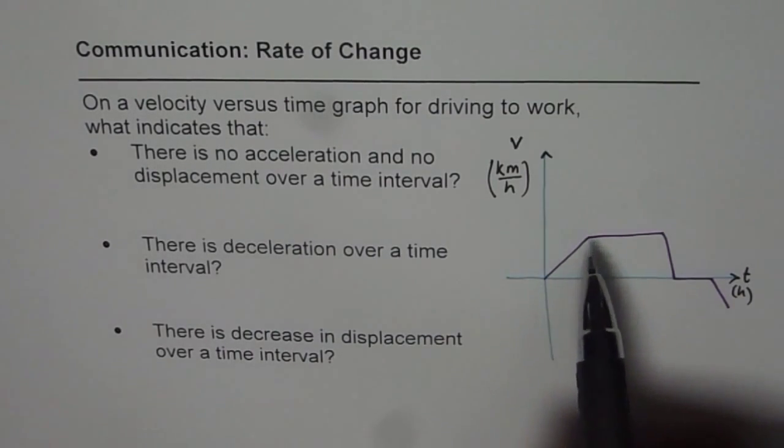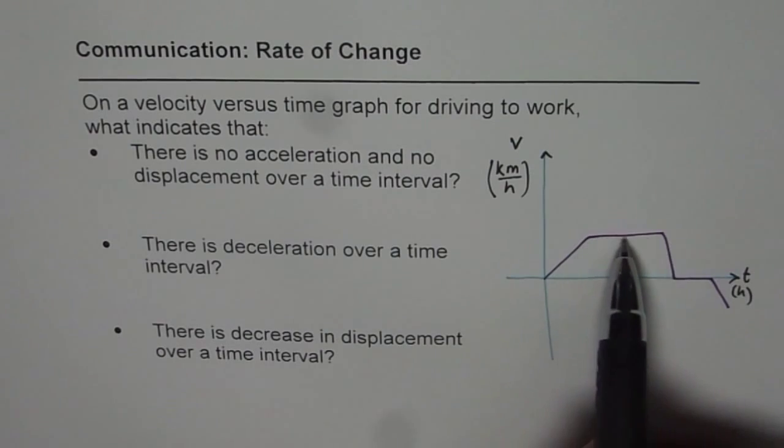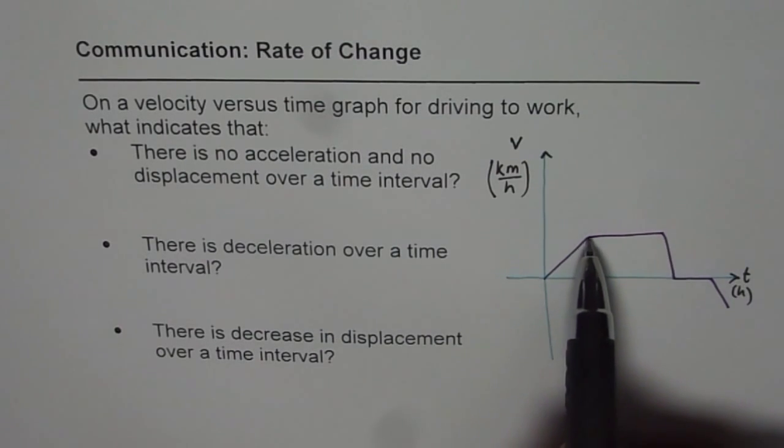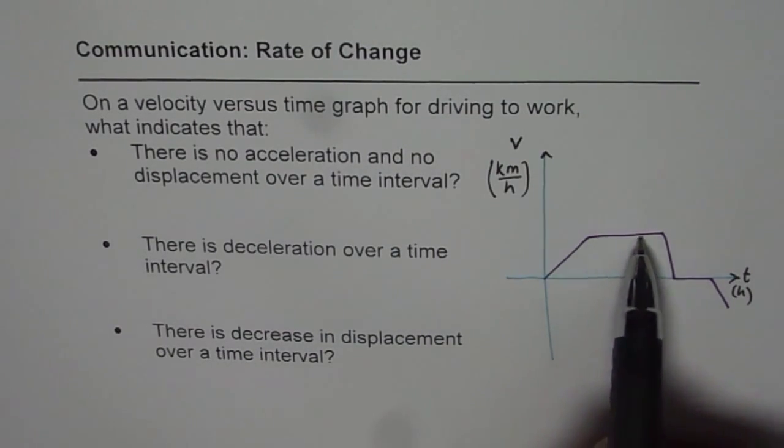Now let's consider this graph. It means velocity is increasing, distance is increasing, velocity is kind of constant, distance is still increasing. Velocity is constant means there is no acceleration at that time. A horizontal line indicates constant velocity, zero acceleration.